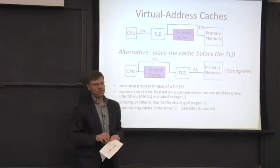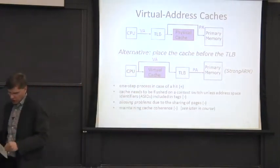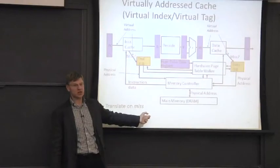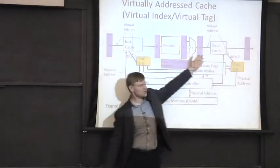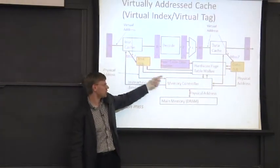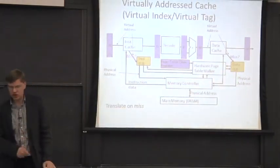This is mostly about a virtually indexed, virtually tagged cache. If we look at how this fits into the pipeline, life gets a lot better from a hardware perspective. You really only have to translate on a cache miss. So your main processor pipeline looks the same, but on a cache miss you have to go through either your instruction TLB or your data translation look-aside buffer.